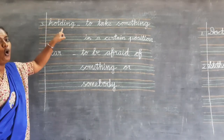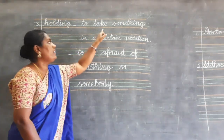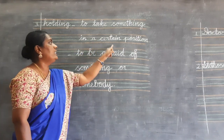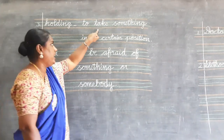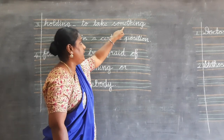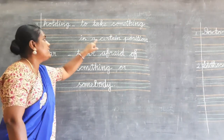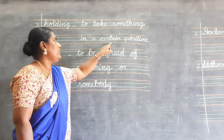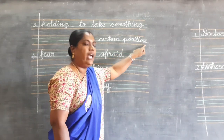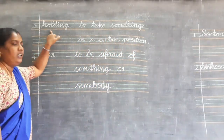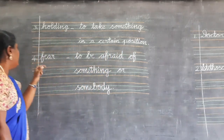Number three: Holding. H-O-L-D-I-N-G. To take something in a certain position. Something: S-O-M-E-T-H-I-N-G. Certain: C-E-R-T-A-I-N. Position: P-O-S-I-T-I-O-N. Holding means to take something in a certain position.